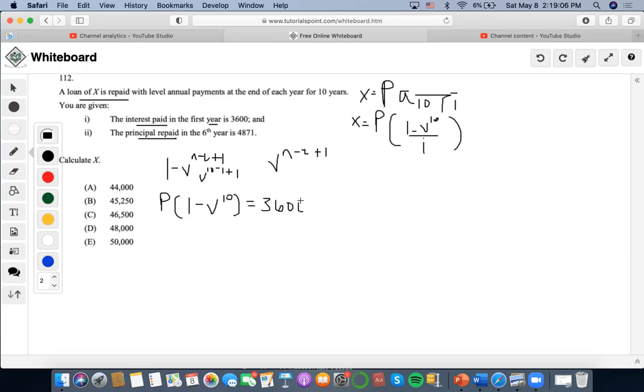And then this one is 10 minus 6 plus 1, which is 5. This is gonna be P times v to the 5, 4871.